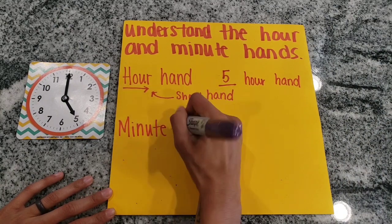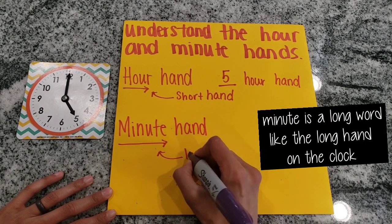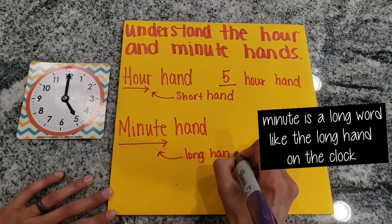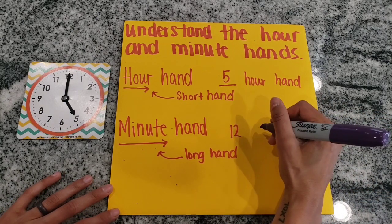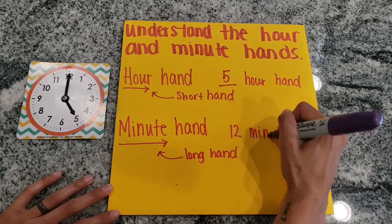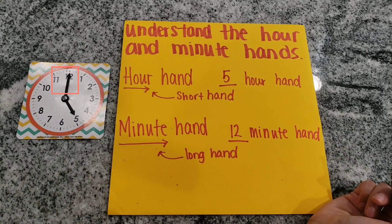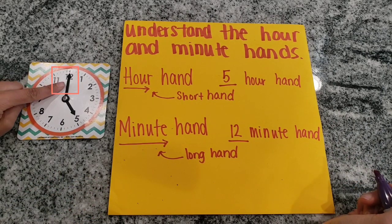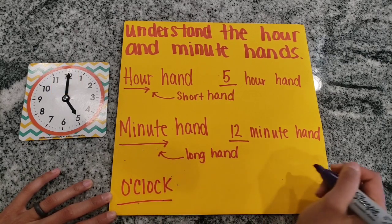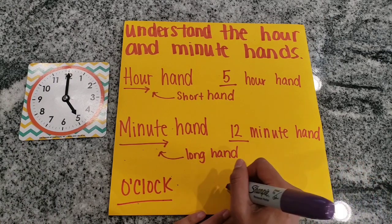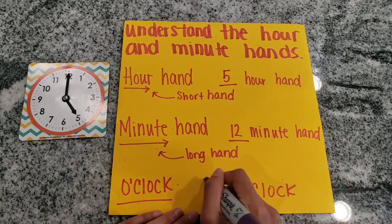Now let's take a look at the minute hand. Another way I can remember what the minute hand represents is because minute is a long word, and the long hand on the clock represents the minute hand. Take a look at our clock — the minute hand is pointing to the 12. I'm going to label that here. When the minute hand points to 12, we say o'clock. So this clock shows five o'clock.